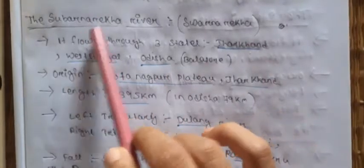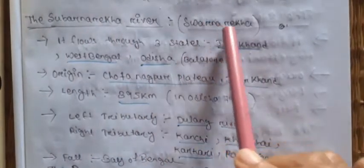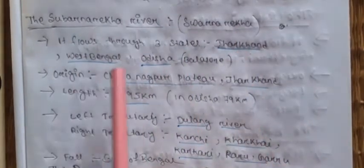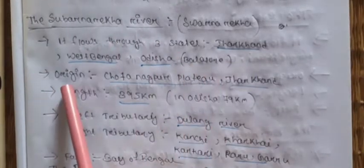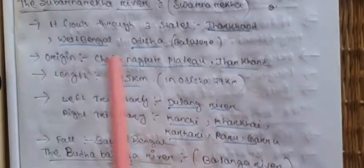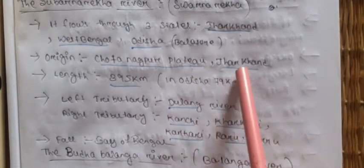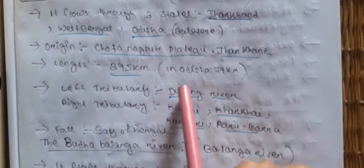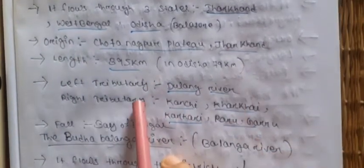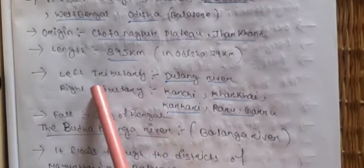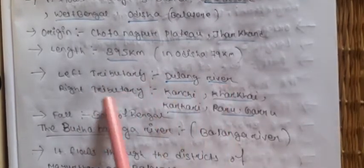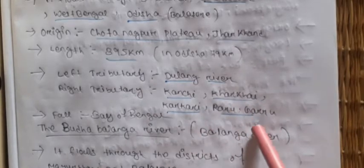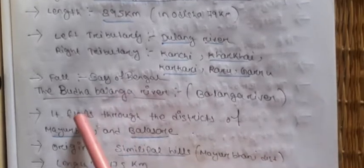First we study the Subarnarekha river, also known as Swarnarekha. It flows through three states: Jharkhand, West Bengal, and Odisha — entering Odisha in Balasore district. Its origin is in the Chota Nagpur plateau in Jharkhand. Total length is 395 km; in Odisha, 79 km. Left tributary: Dulung river. Right tributaries: Kanchi, Kharkhai, Korkari, Raru, Garu. It falls into the Bay of Bengal.